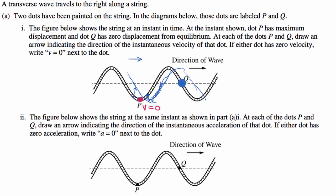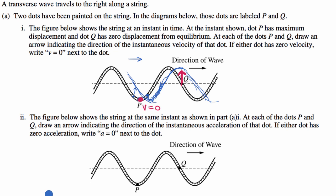Now what about at point Q? Well, we just sketched what's going to happen a moment later — our transverse wave is going to look like this. Point Q is going to be up higher, so point Q is moving upwards. If we want to draw its velocity vector, it would look something like that — an upward arrow.